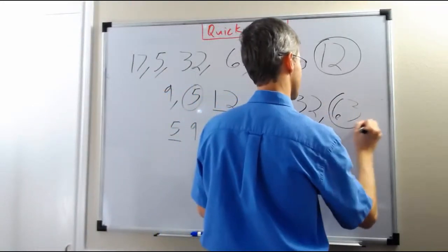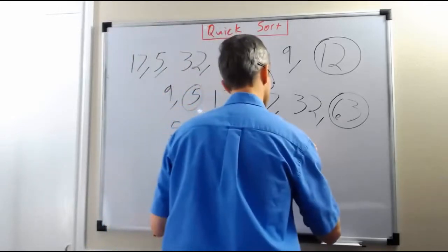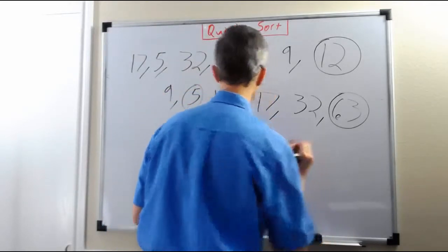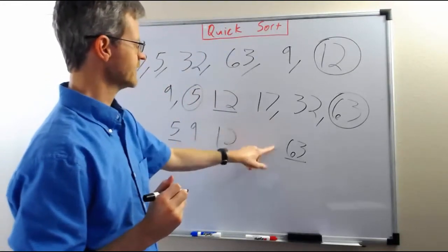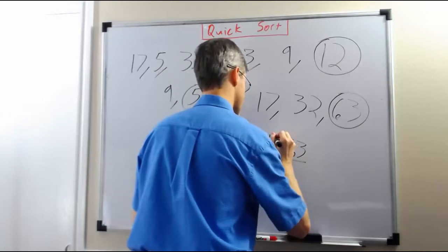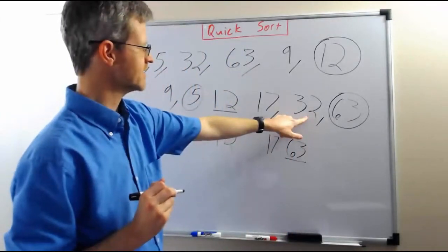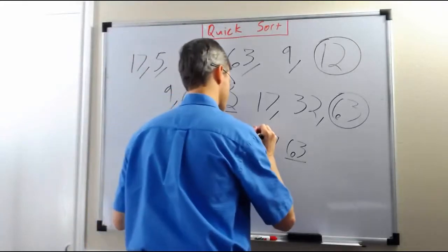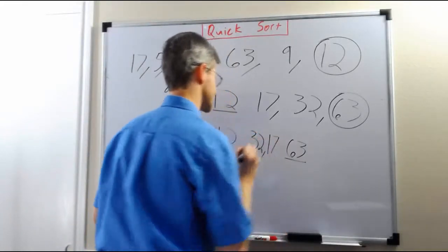We're going to pick the rightmost element of the list as the pivot again, write it here and underline it to show that it was the pivot before. 17 is less than the pivot so it's going to go before the 63. And then 32 is less than the pivot so it's also going to go before the 63, and it'll go before the 17 since the 17 is already next to the 63.